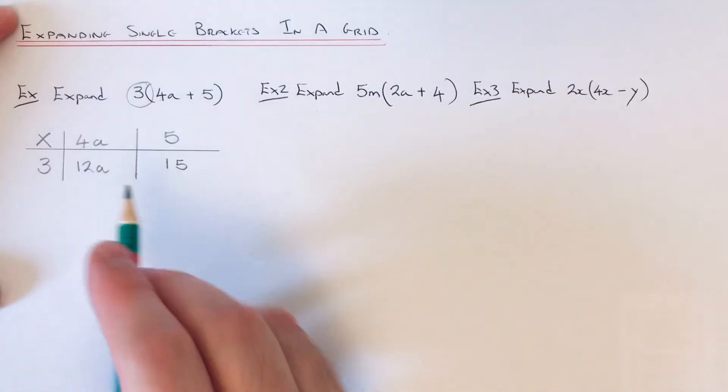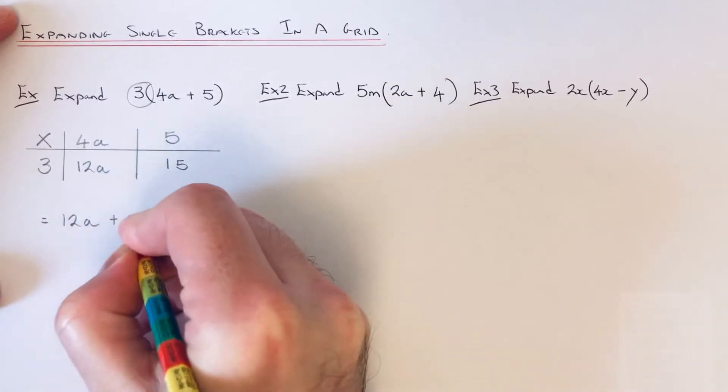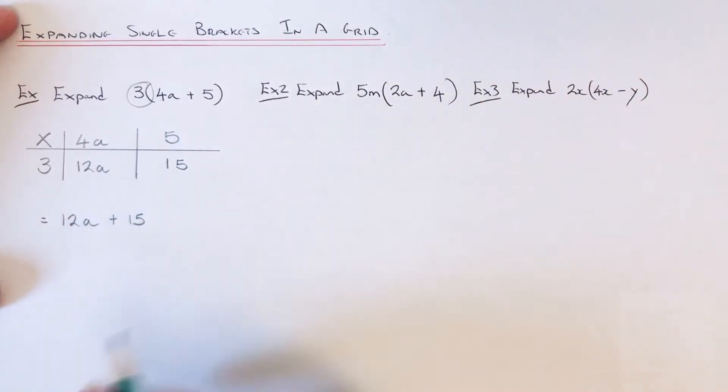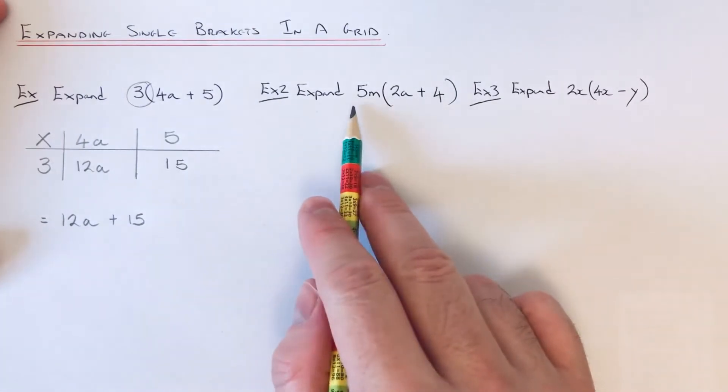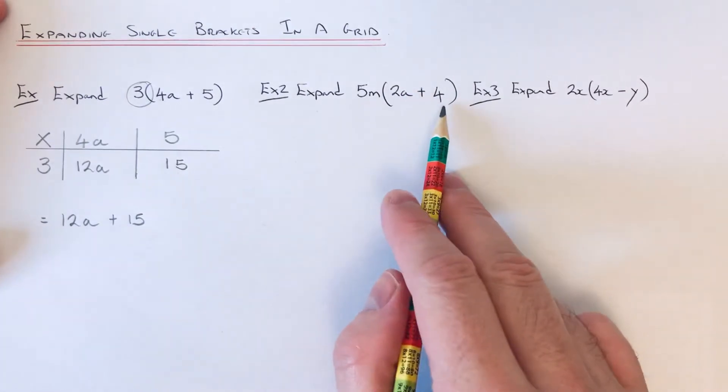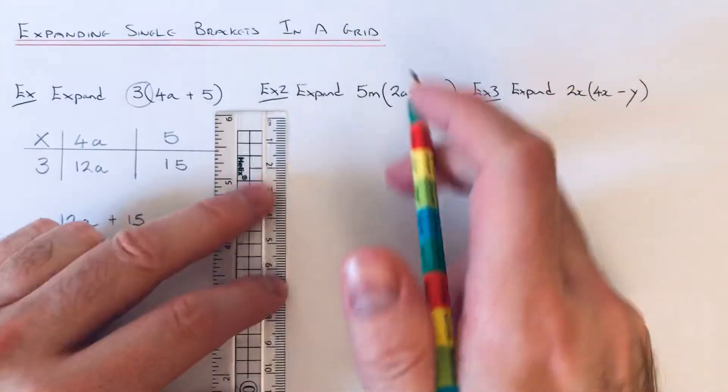So these are our two terms, so it'll be 12a + 15. Let's move on to Example 2. This time we've got expand 5m(2a + 4), so again let's draw a grid out similar to the first.